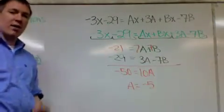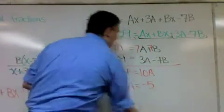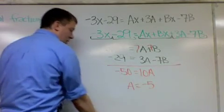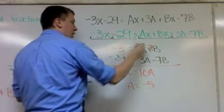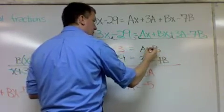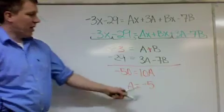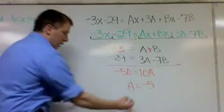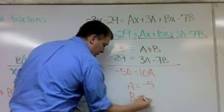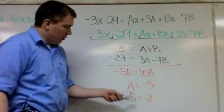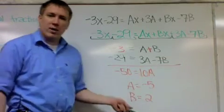And to find b, I could plug it back in. And let me plug it back into this one, when it looked a lot simpler. When it was negative 3 equals a plus b. Now if a is negative 5, negative 5 plus what equals negative 3? And you can do that math, you'll get 2. Negative 5 plus 2 is negative 3. So a is negative 5 and b is 2.